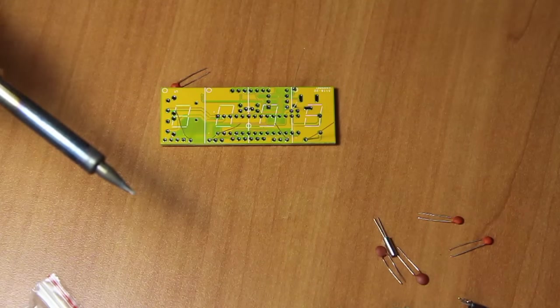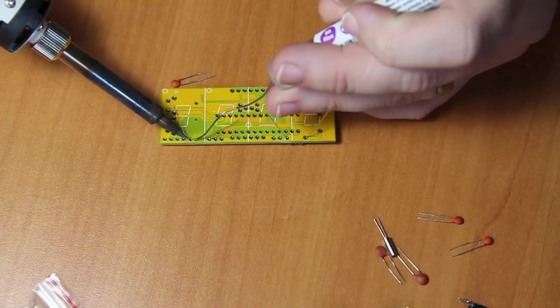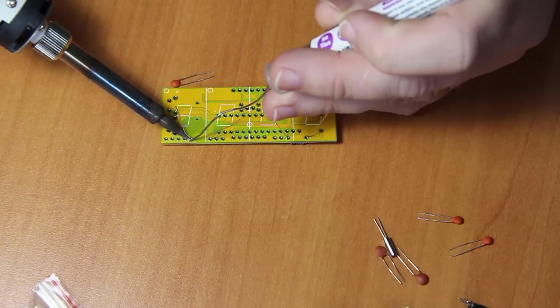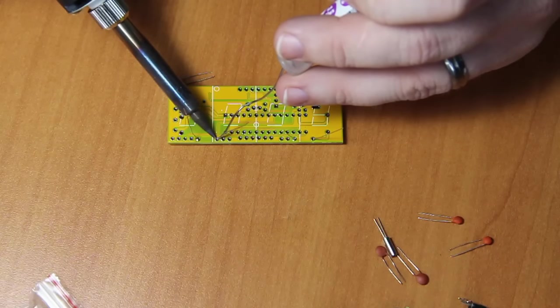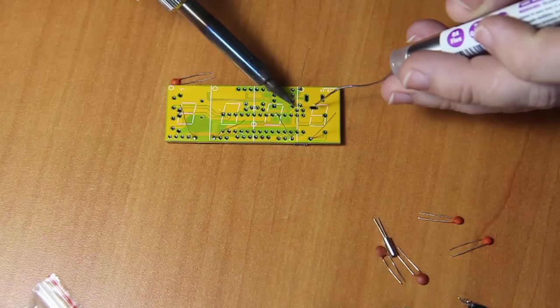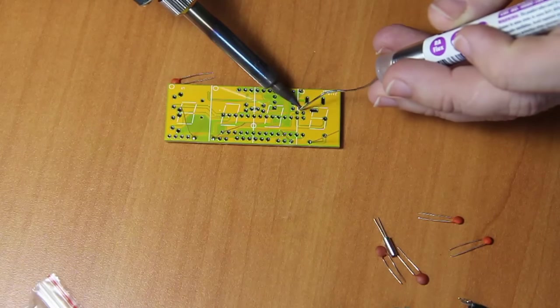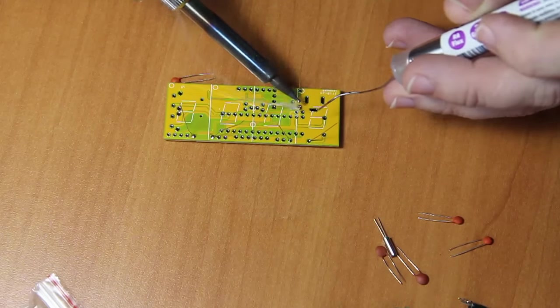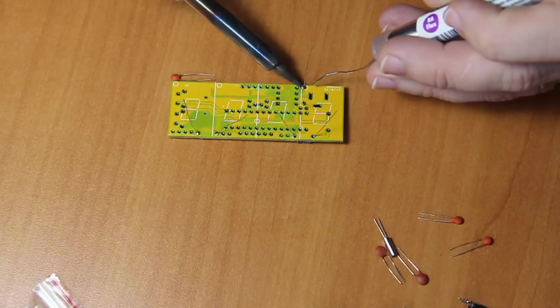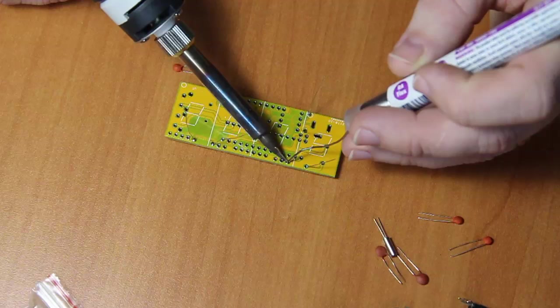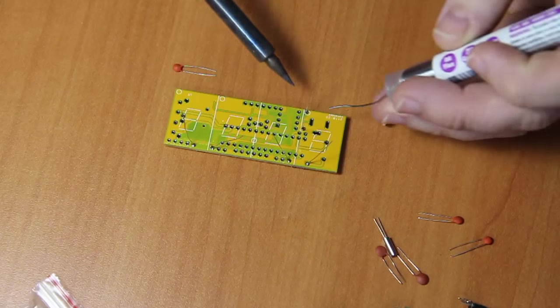So the resistor is going to go into R1, R2, R3, very clearly labeled on the board. Put the legs through like so, then spread the legs at an angle and that holds them in. My technique for soldering: put the tip onto the component, one two, solder, one two, just like that. Heating the component, one two, solder, one two.